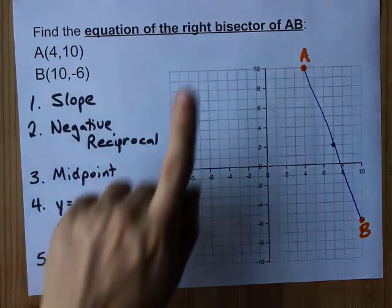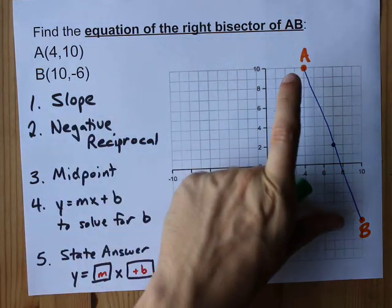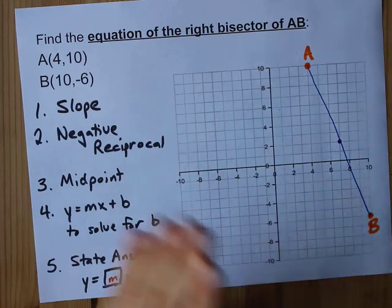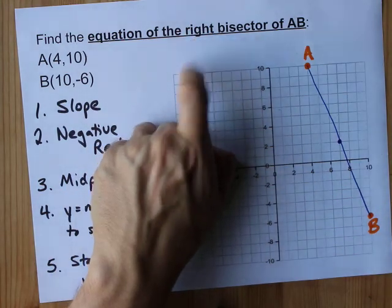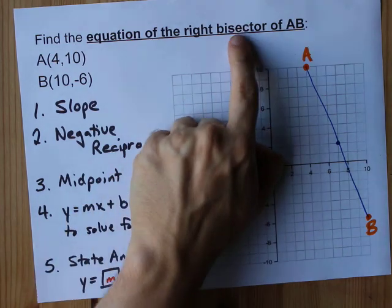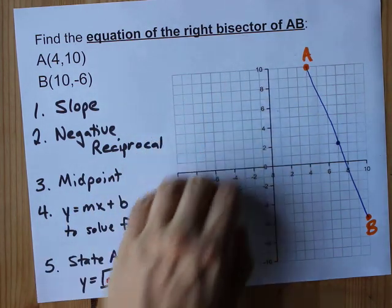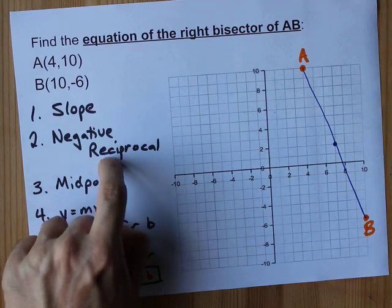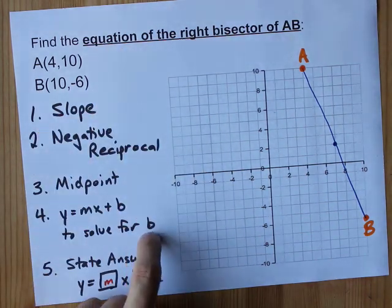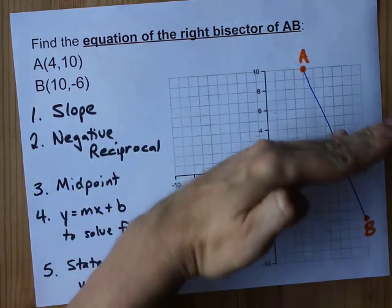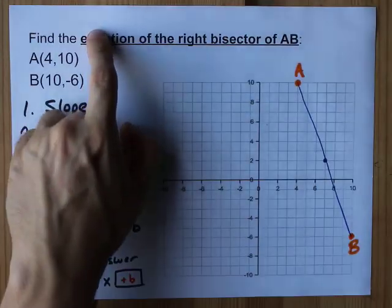Your job to find a right bisector is to find the slope between the two points you're given and take its negative reciprocal. That takes care of the right portion. Find the midpoint. That takes care of the bisector portion. And using y equals mx plus b with that point and your new slope to solve for the new y-intercept is how you get the equation itself.